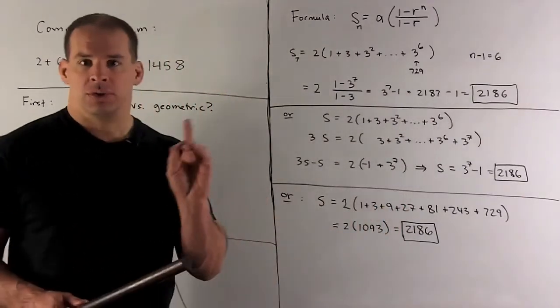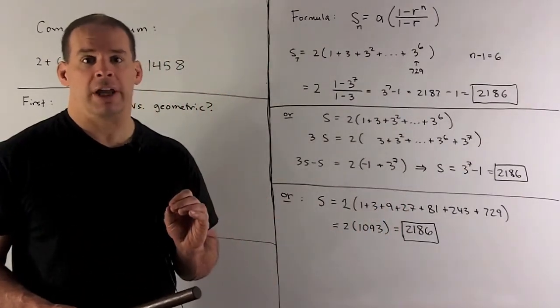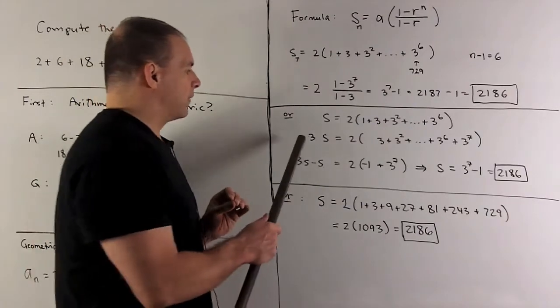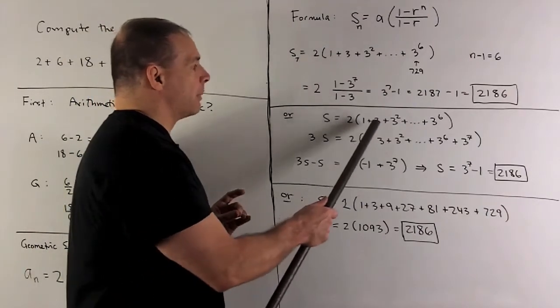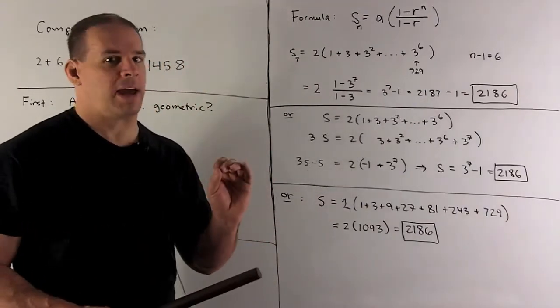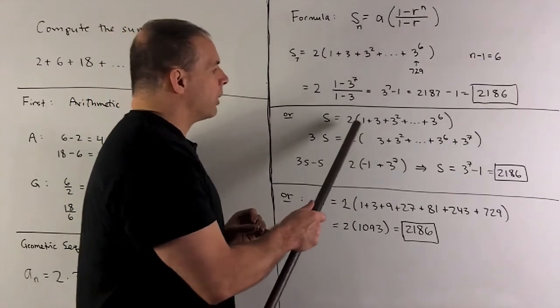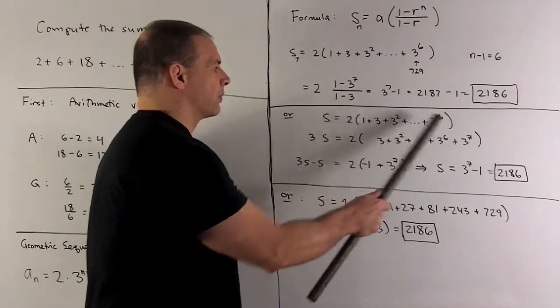Write it out as 2 times a sum of powers of 3. We're going to take 3 times s. So I'm going to use our common quotient, multiply by that. What happens? Well, when I multiply each of these powers of 3, we're going to move their exponents up by 1.